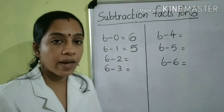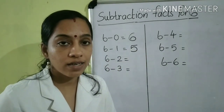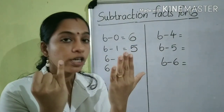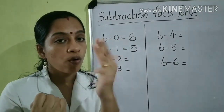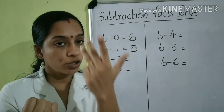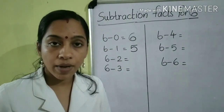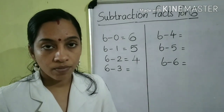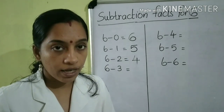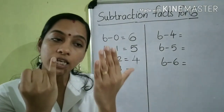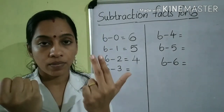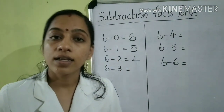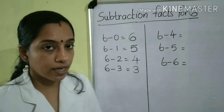Then, 6 minus 2. How will you find out the answer? Take 6 fingers and fold 2 fingers: 1, 2. What will be the answer? 1, 2, 3, 4. That is, 6 minus 2 is equal to 4. Next, 6 minus 3. Take 6 fingers and fold 3 fingers: 1, 2, 3. Count the remaining fingers: 1, 2, 3. So the answer is 3. That is, 6 minus 3 is equal to 3.